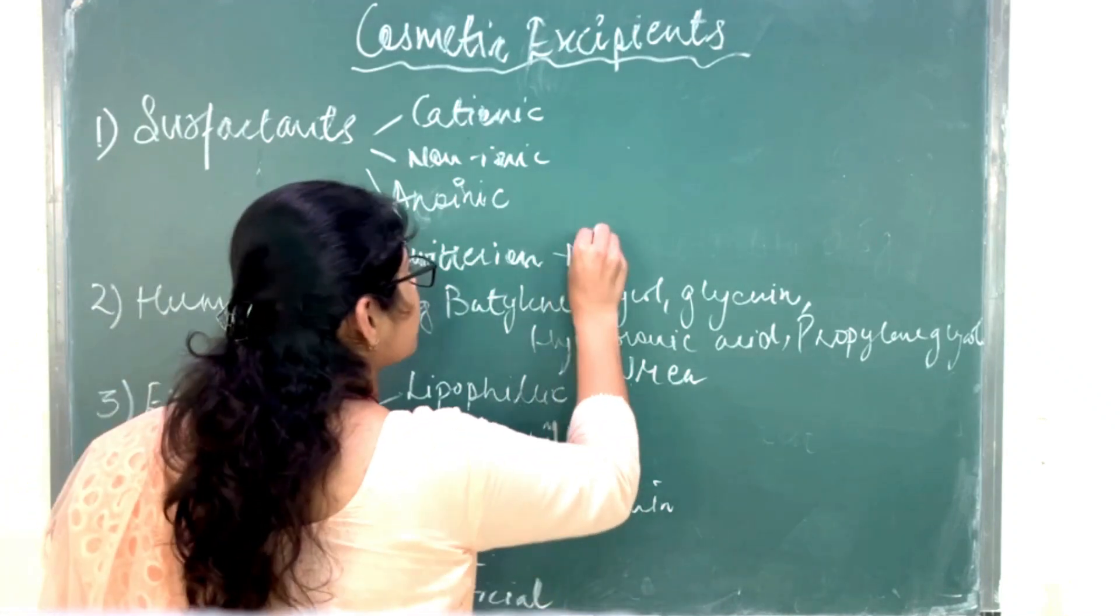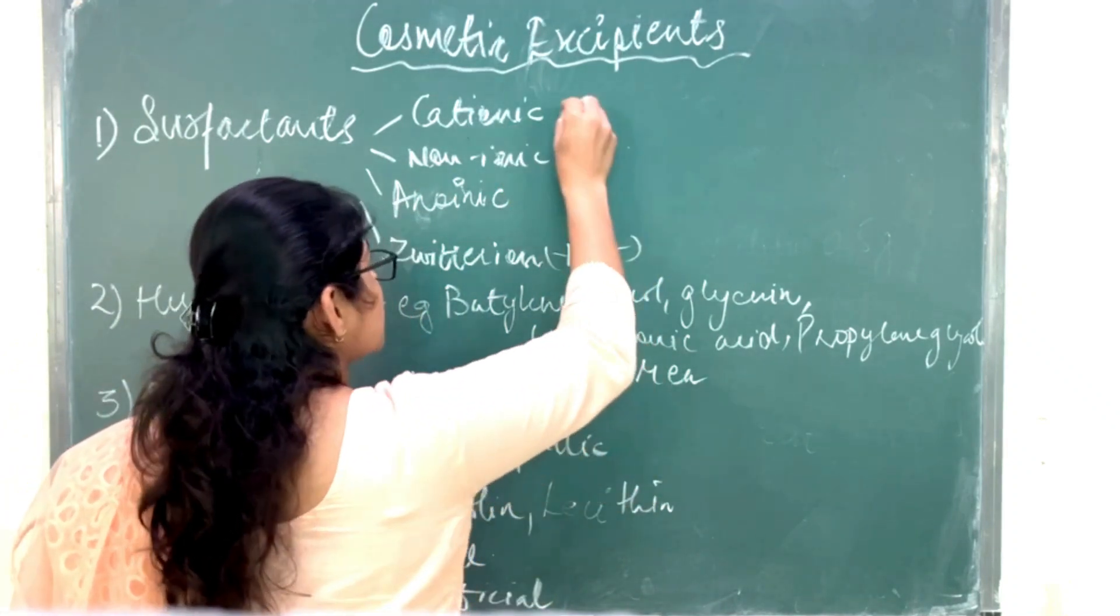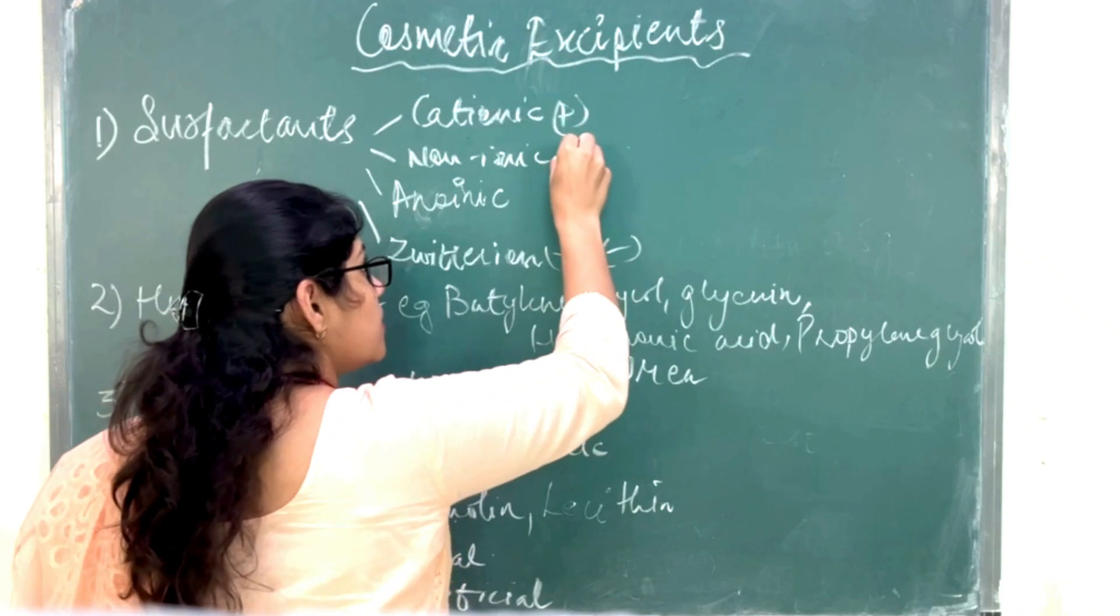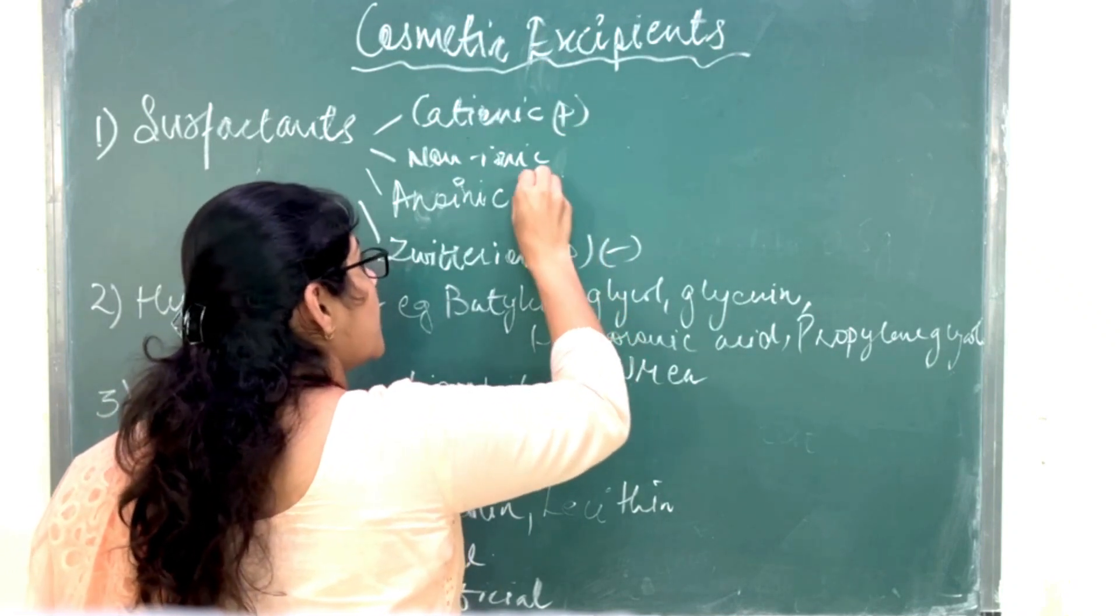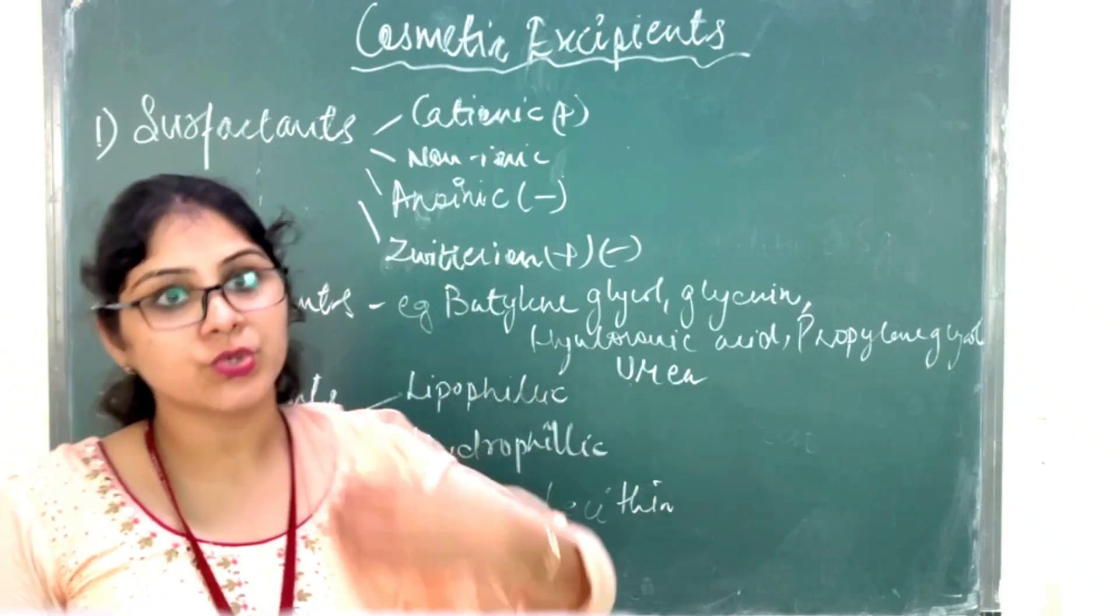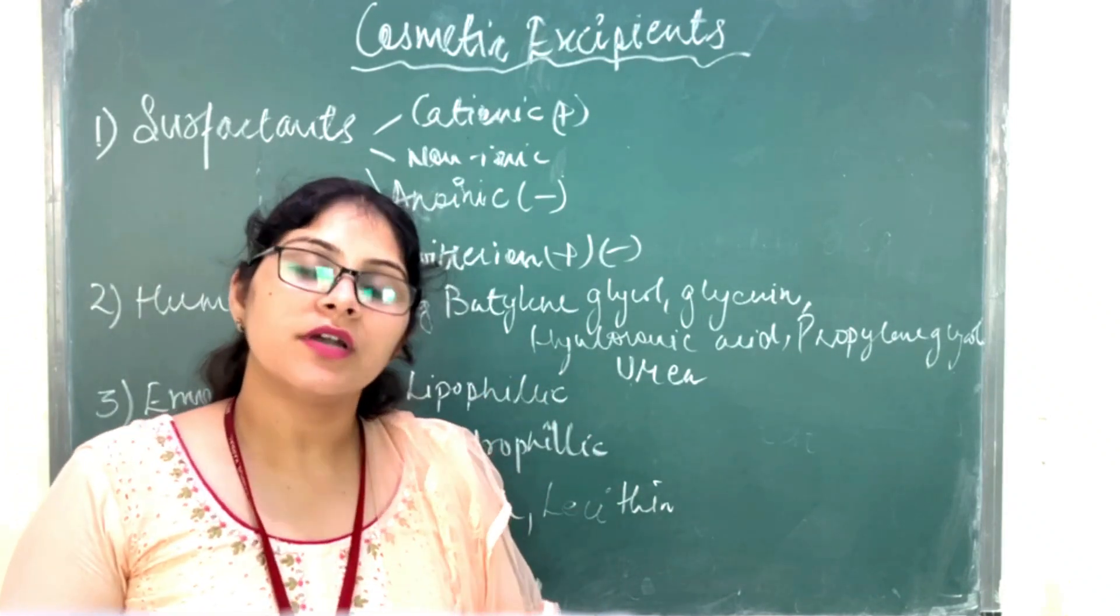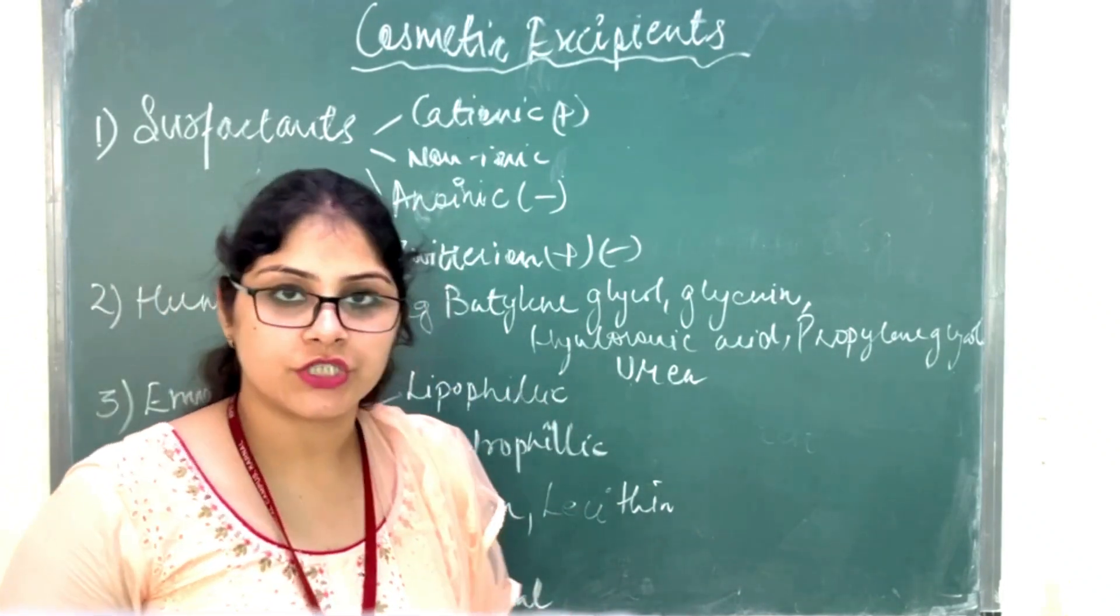Zwitterionic means they will have positive and negative charge. Both cationic, positive charge, and nonionic, no charge, and anionic, negative charge particles which are used as surfactants for different cosmetic formulations.